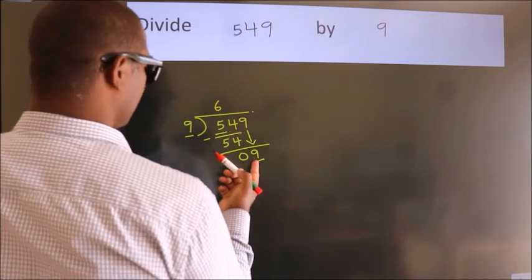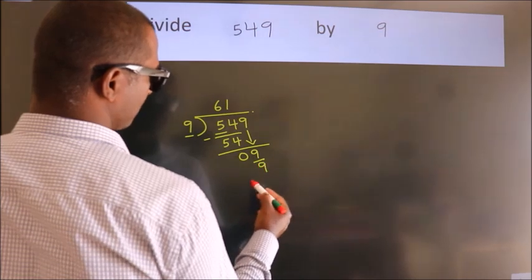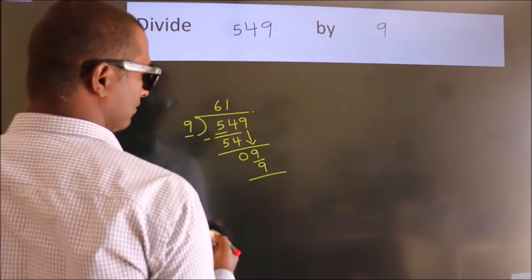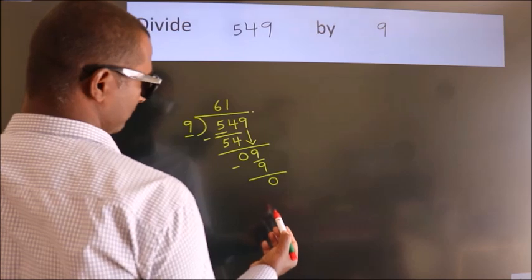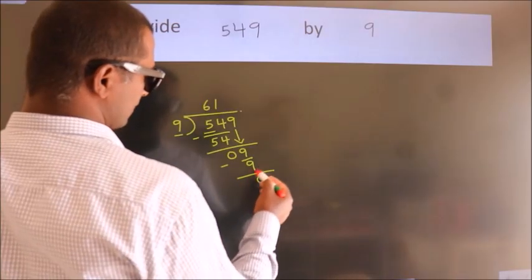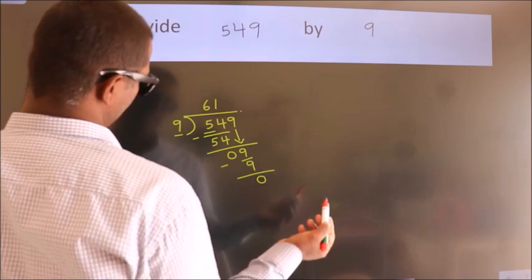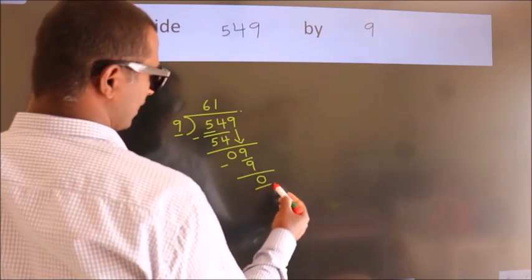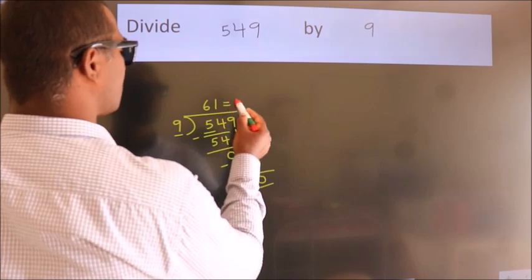When do we get 9 in the 9 table? 9 times 1 equals 9. Now we subtract. We get 0. After this, no more numbers to bring down and we got remainder 0. So this is our quotient.